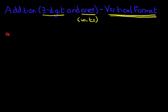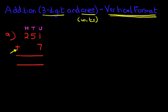Let's begin with our first example. We'll start off with a nice easy one. 251 plus 7. Now you don't have to, but we're going to label the columns. We've got units, tens, and hundreds.